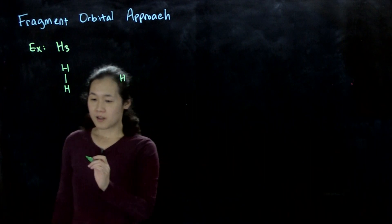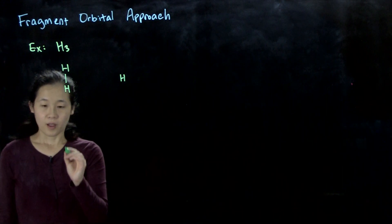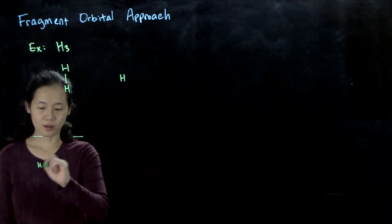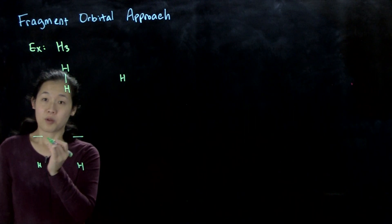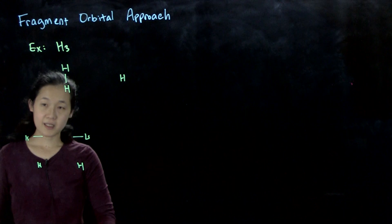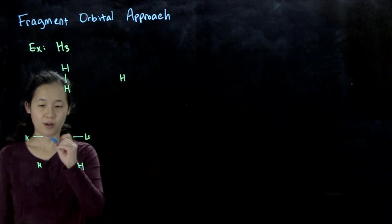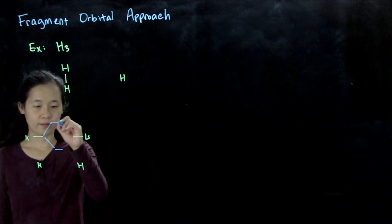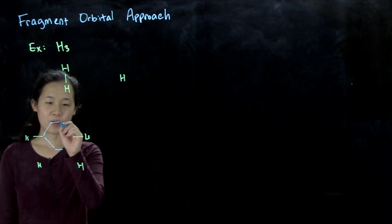When you think about having two H atoms, these are both just the 1s orbitals. Easy from GenChem—we should form our bonding and anti-bonding combinations. They're not split evenly, but we won't go into that.